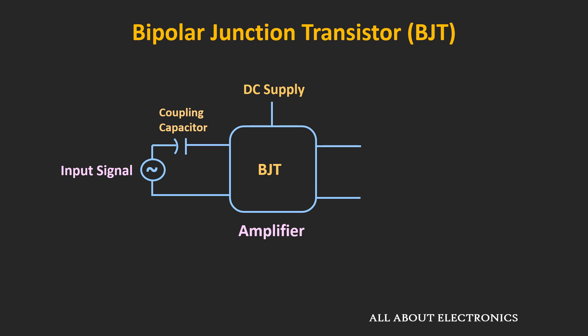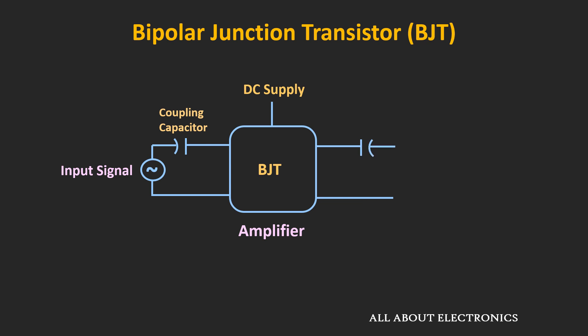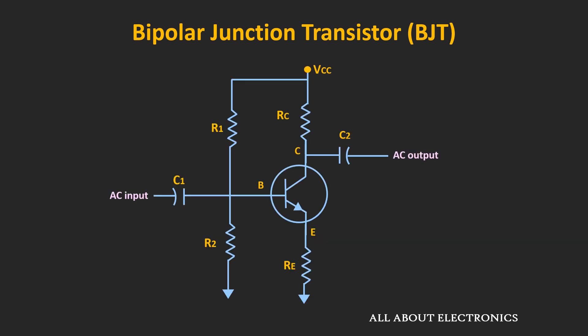Similarly, at the output side, coupling capacitors are used to block the DC voltage from the output signal. That is the basic function of the coupling capacitor — to isolate the AC and DC signals. You might have seen these coupling capacitors in transistor circuits. For example, in this circuit, capacitors C1 and C2 are the coupling capacitors.